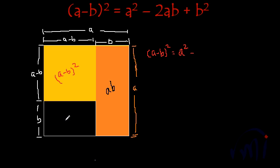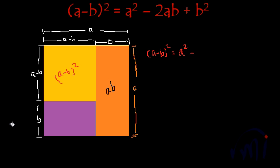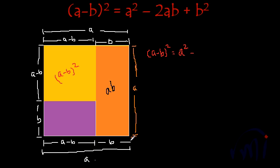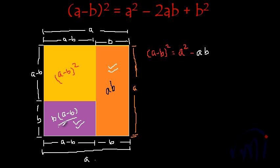And then we have one more rectangle which I am going to color in purple. This is a rectangle whose one side is equal to b and its length is actually equal to a minus b — this whole was equal to a and this much is b, so the remaining is a minus b. So the area of this rectangle will be b multiplied by a minus b. So if from the bigger square we remove this area and this area, we will get the area of the square whose one side is equal to a minus b. So we have a square, then we subtract this area that is minus ab.